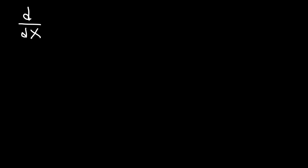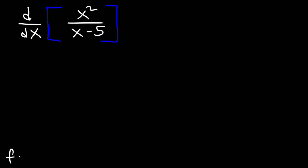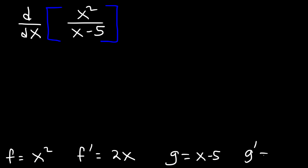Let's try a similar example. Go ahead and find the derivative of x squared divided by x minus 5. Feel free to pause the video and give this problem a shot. So let's identify f and g: f is the numerator x squared, and g is the denominator x minus 5. f prime, the derivative of x squared, is 2x. And g prime, the derivative of x minus 5, is 1.